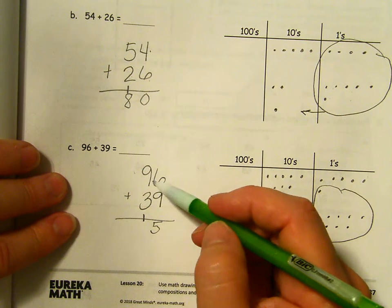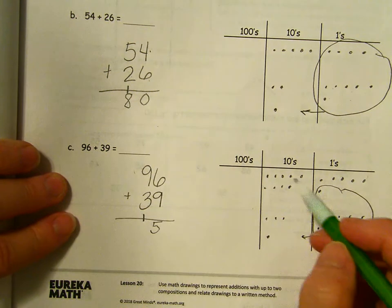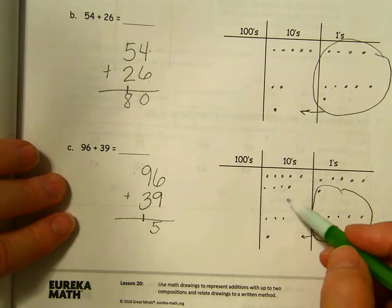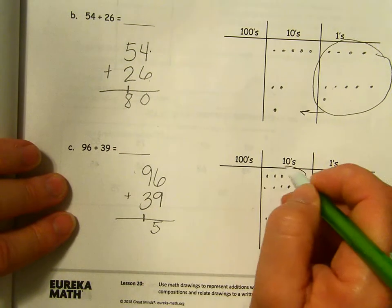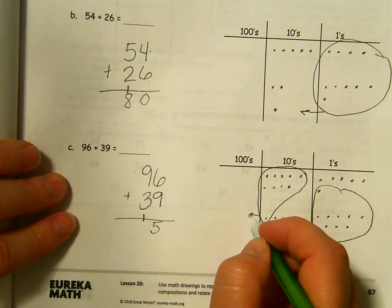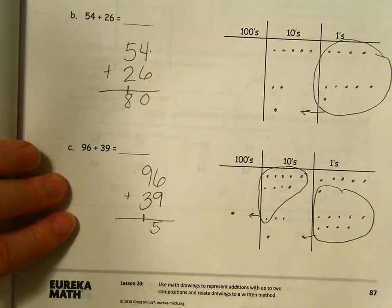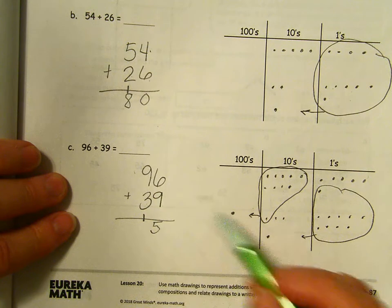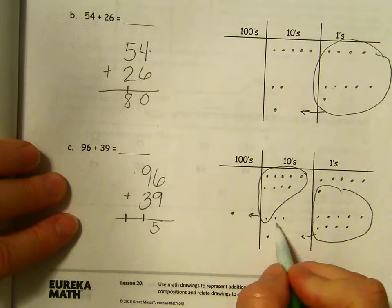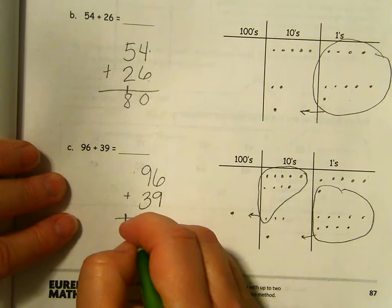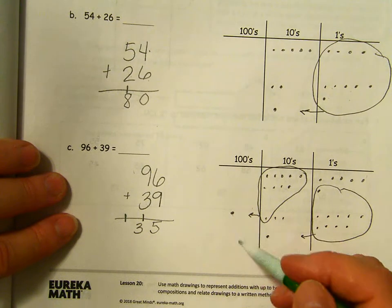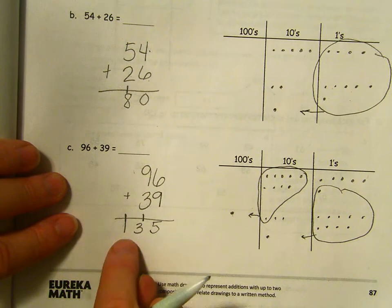Now I'm going to add nine plus three plus one. Can I make a group of 10 here? I sure can. I have nine. I only need one more for that to be a group of 10 tens, which is the same as 100. So when I add nine plus three plus one, I have a group of 10 tens, which is a hundred I'm going to write there. And then how many 10s are left? Three. Are there any other hundreds for me to add it to? Nope. Just the one. So we have 135.